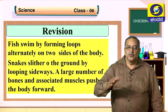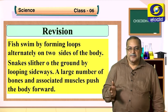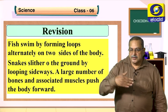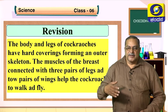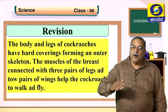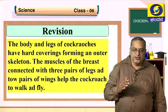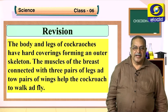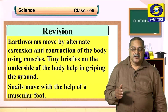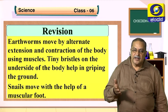Strong muscles and light bones work together to help birds fly by beating their wings. Fish swim by forming loops alternately on two sides of the body. Snakes slither by looping sideways — a large number of bones and associated muscles push the body forward. The legs and hard exoskeleton of cockroaches, with three pairs of legs and two pairs of wings, help them walk and fly. Earthworms move by alternate extension and contraction of the body, and snails move with the help of a muscular foot.